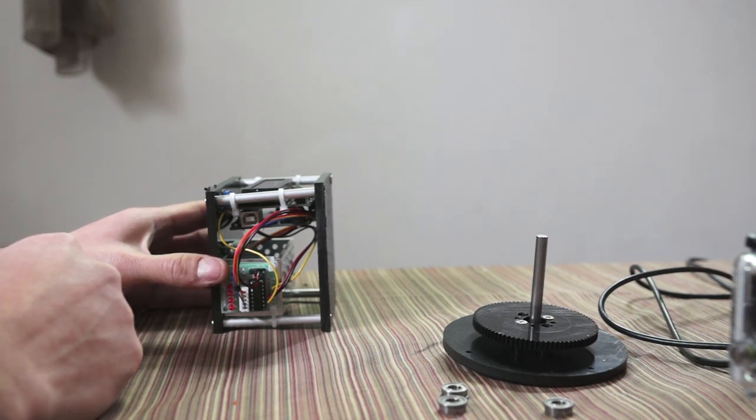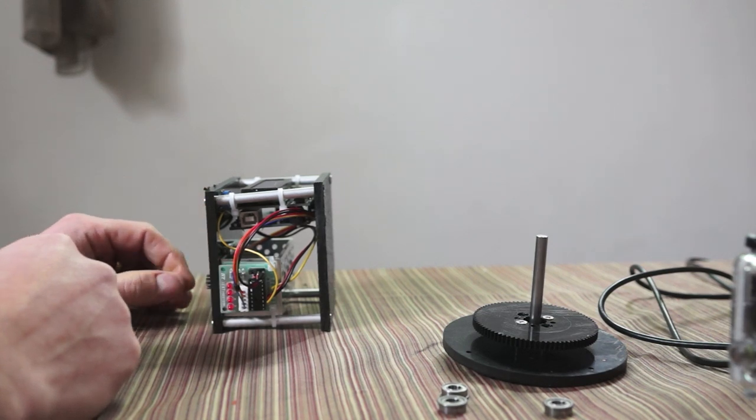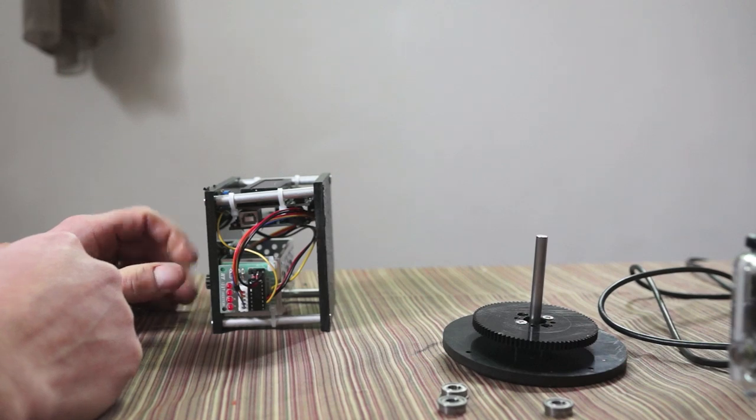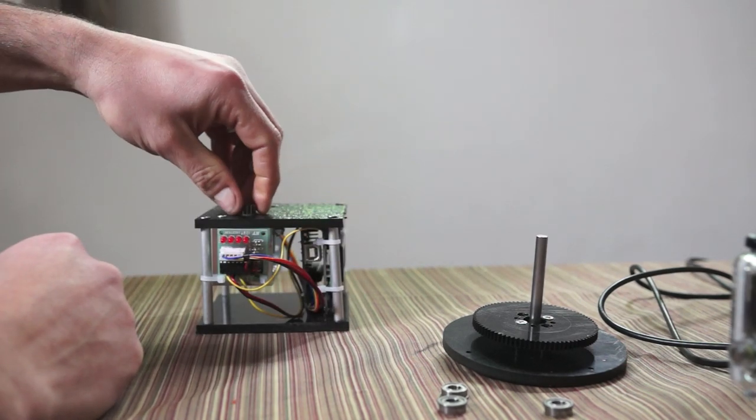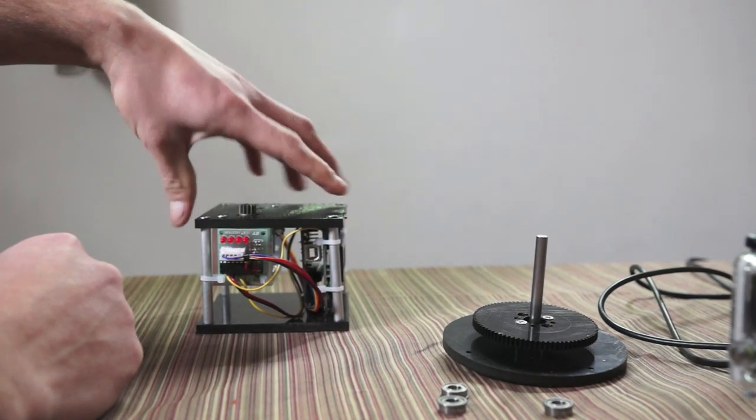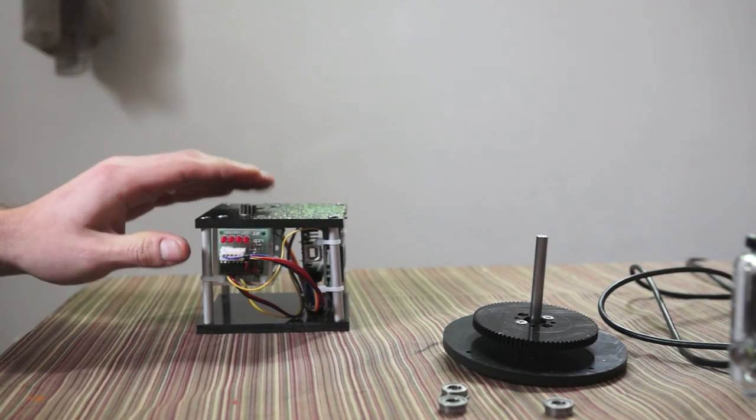My camera weighs in at close to three pounds with the lens, tripod head, the little mini one, the camera body, and the battery. So, you know, doing the gear reduction gives me a lot of power.